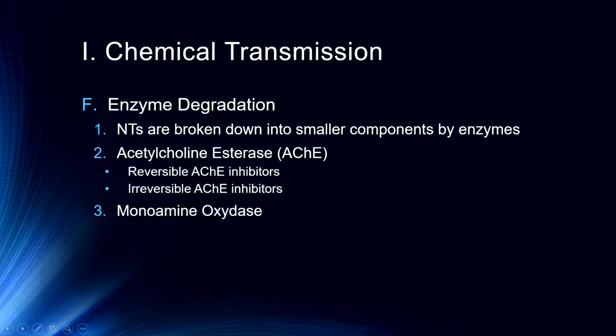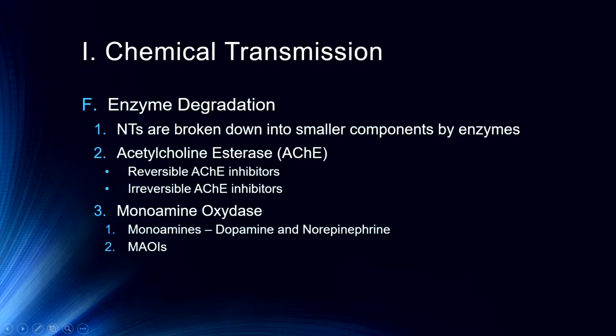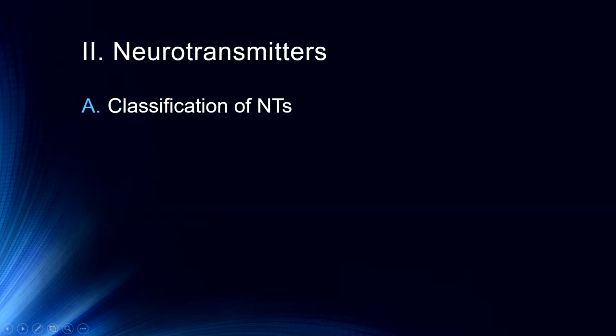Monoamine oxidase is an enzyme which breaks down monoamines such as dopamine, norepinephrine, and serotonin — particularly dopamine and norepinephrine. Monoamine oxidase inhibitors block monoamine oxidase from breaking down these neurotransmitters, increasing their availability in the synapse. That covers how neurotransmission is stopped.